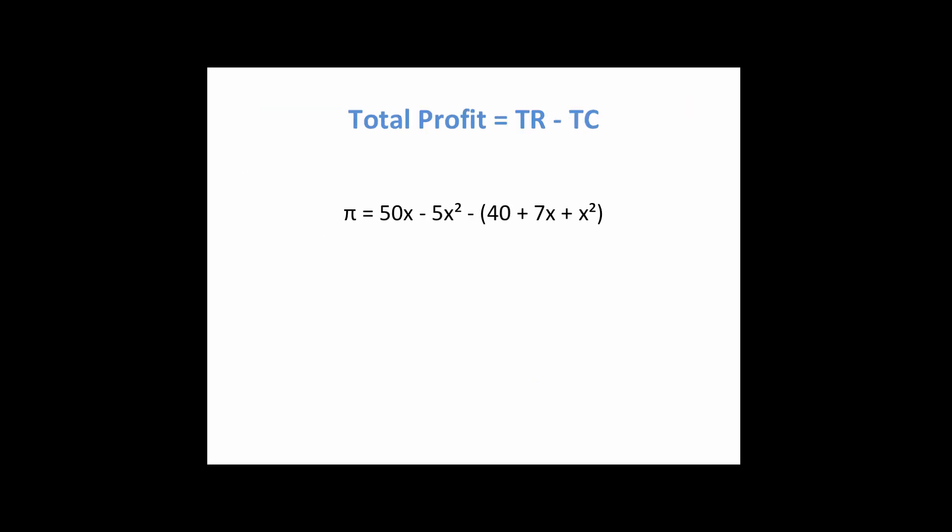To recap: total profit is revenue minus costs. You write out your revenue function — 50X minus 5X squared — and we call profit pi. So pi equals 50X minus 5X squared, minus all of total costs. You need to multiply every individual figure in the cost function by that minus sign. Expanding out that equation: minus 40, minus 7X, minus X squared. Adding like terms, we complete the equation to arrive at our derived total profit function: 43X minus 6X squared minus 40.